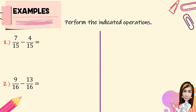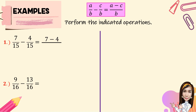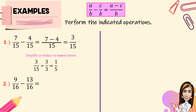Now let's proceed to subtracting similar fractions. For number 1, given 7 over 15 minus 4 over 15. Same procedure: subtract the numerators, then copy the common denominator, 15. So 7 minus 4 equals 3 over 15. 3 over 15 can be simplified — the greatest common factor is 3. Dividing both by 3: 3 divided by 3 is 1, and 15 divided by 3 is 5. So the lowest term is 1 over 5.